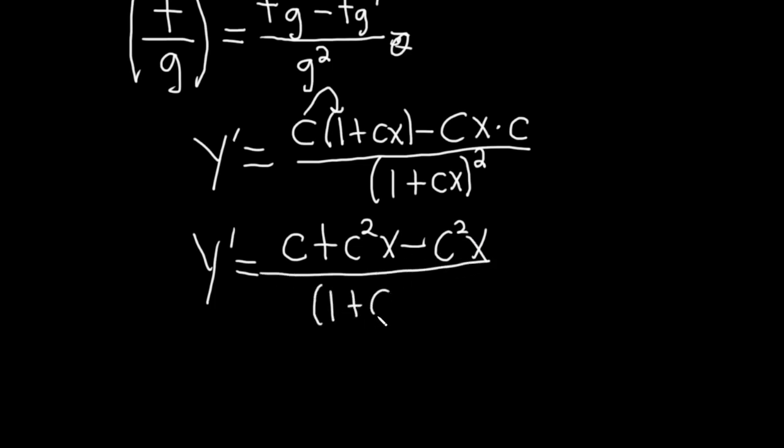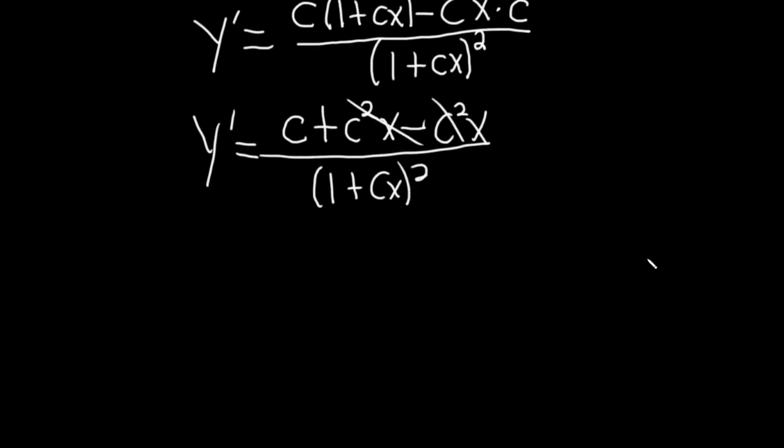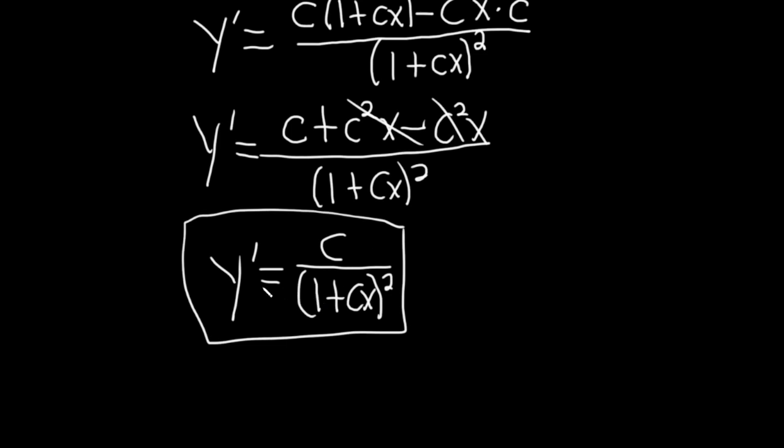1 plus cx quantity squared. So these cancel and so we're left with y prime equals c over 1 plus cx and this whole thing here is squared. And that would be the derivative of y.